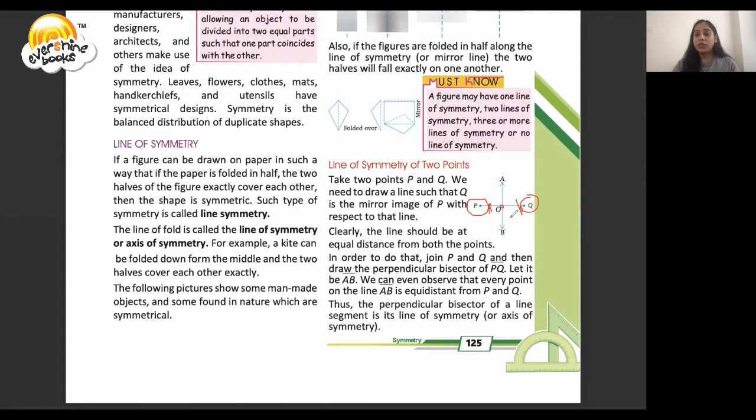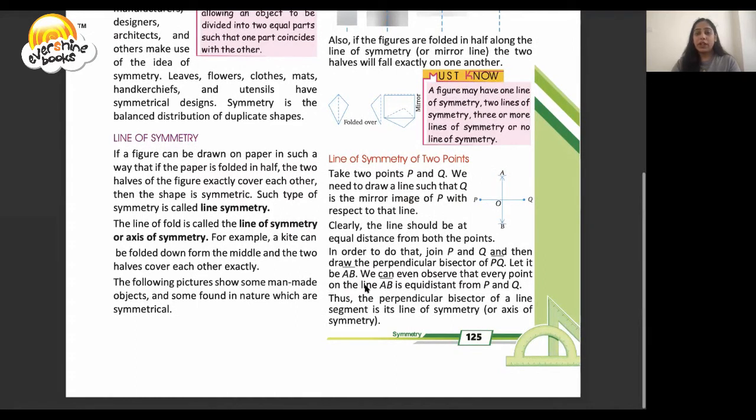In order to do that, join PQ and then draw the perpendicular bisector of PQ. Let it be AB. We can observe that every point on line AB is equal distance from P and Q, because the perpendicular bisector of a line segment is its line of symmetry.